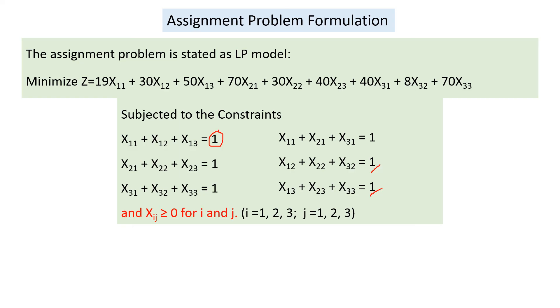The non-negativity constraint states xij greater than or equal to 0 for all i and j from 1 to 3. This is all about today's discussion on the formulation of the assignment problem. We will continue with the next section on how to find the optimum solution for the assignment problem using different techniques. Thank you for listening.